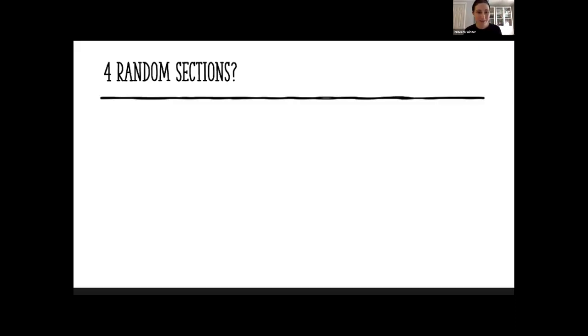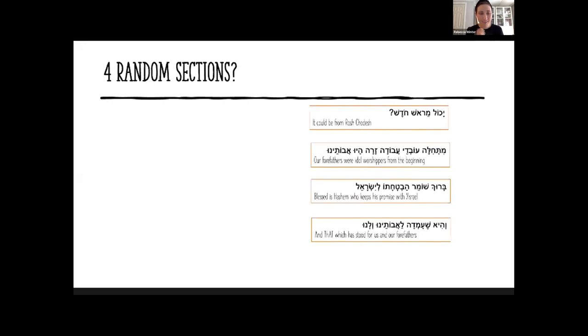So we'll get right into it. These four topics together are seemingly kind of random, very short sections in the Haggadah that really precede our telling of the story of Yetziat Mitzrayim. We'll hear from Rabbi Etshalom next about how we expand on these verses from Bikurim, and I thought it's interesting that these four sections are sandwiched between the Arba Banim and the verses of Bikurim.